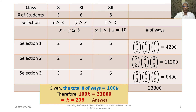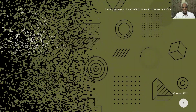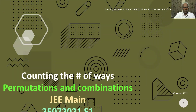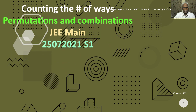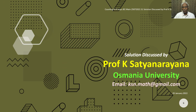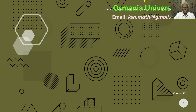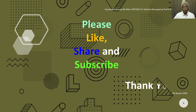That is the discussion of the solution of the problem of counting the number of ways of certain selections subject to the given constraints, from the section permutations and combinations. I hope you have understood the solution. I wish you all the best. Thank you.